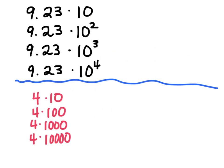First thing, when you're multiplying by 10 or a power of 10, a quick little trick is — you can move the decimal however many zeros are with the 10. So like, this is one zero, so the decimal for the 4 is right after. You can move it to the right one spot, and the answer would be 40.